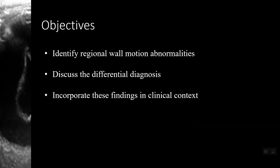Today we will be learning how to identify regional wall motion abnormalities with emphasis on ischemic patterns. Going into this screencast, basic knowledge of cardiac image generation is necessary. If you require information on cardiac image generation including a basic parasternal long, parasternal short, and apical four chamber, I suggest referring to any point of care ultrasound textbook and then get lots of practice.